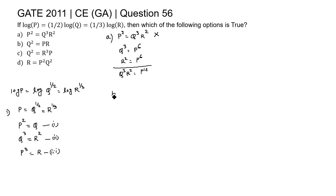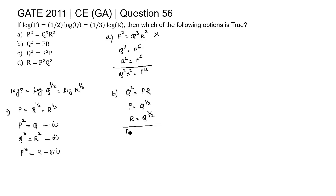Option B states Q² = P · R. Here, P = Q^(1/2) and R = Q^(3/2). If we multiply P · R, we get Q^(1/2 + 3/2) = Q^(4/2) = Q². So we get P · R = Q². This relation is correct, so option B is correct.